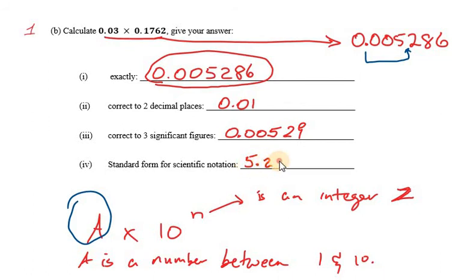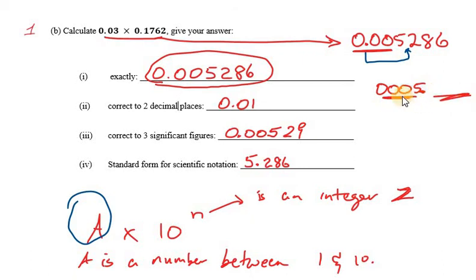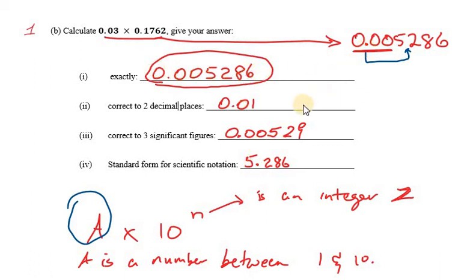So it's actually 5.286. You might ask what happened to the zeros. If the point is after the 5, having zeros before the 5 doesn't make sense, because the whole number portion is now 5. We don't need to write zeros in front of 5 as a whole number. The point separates the whole number portion from the fractional part — so 5 is our whole number and 0.286 is the fractional part. However, this number 5.286 is not the same as the original 0.005286.